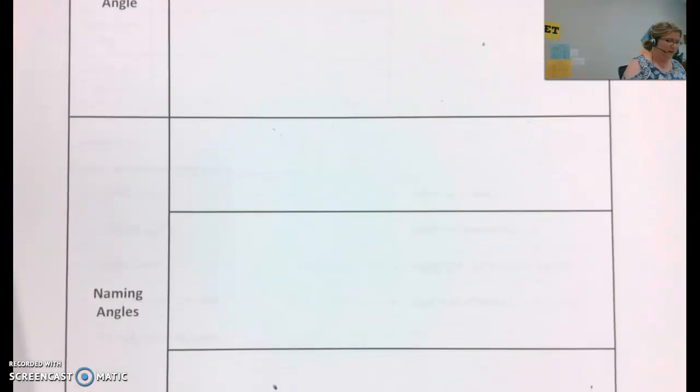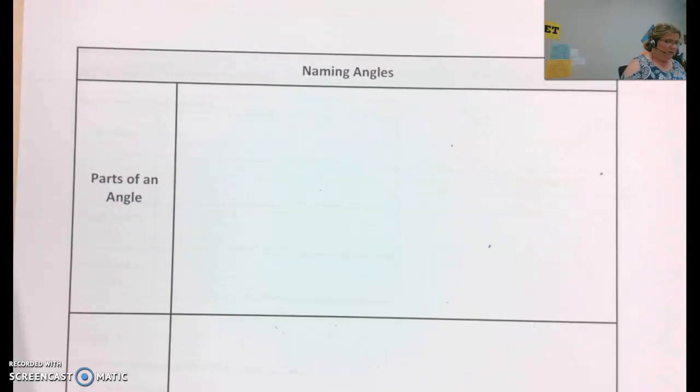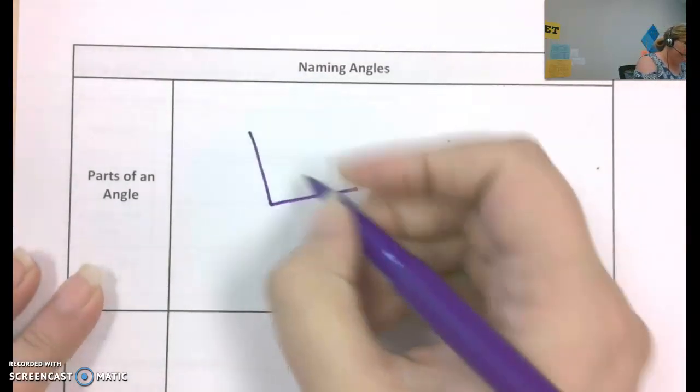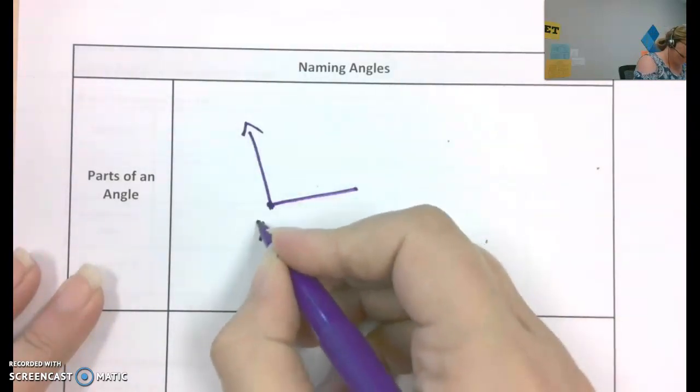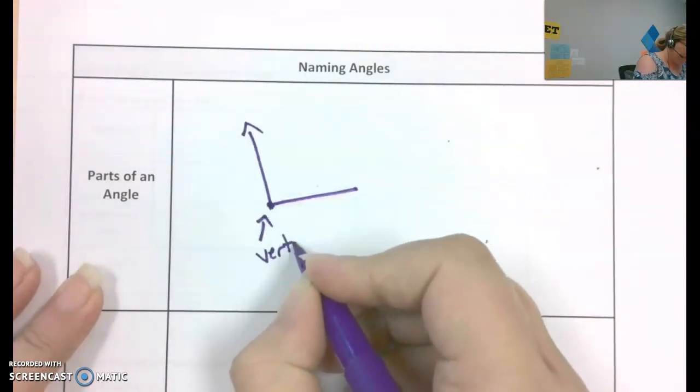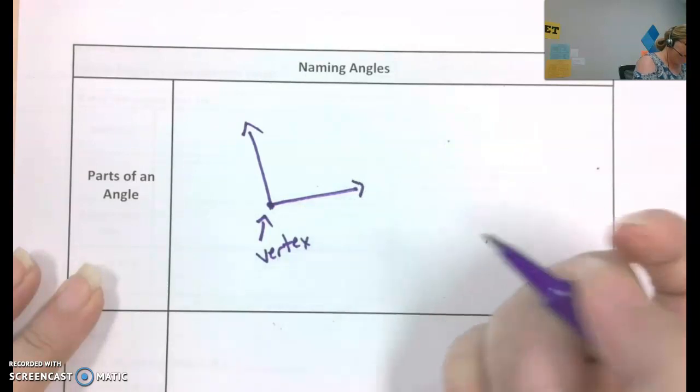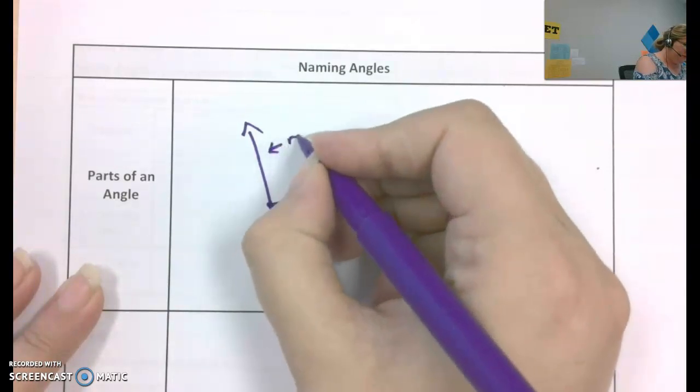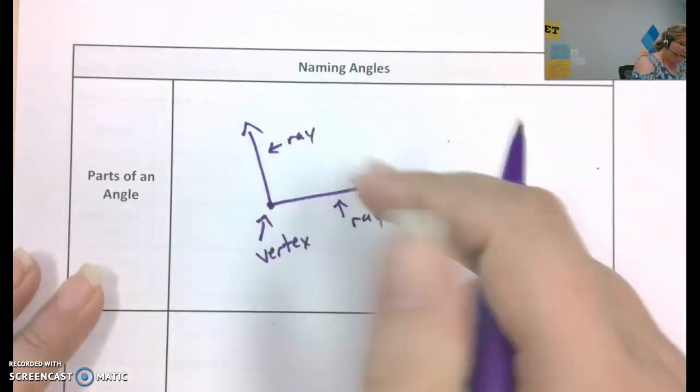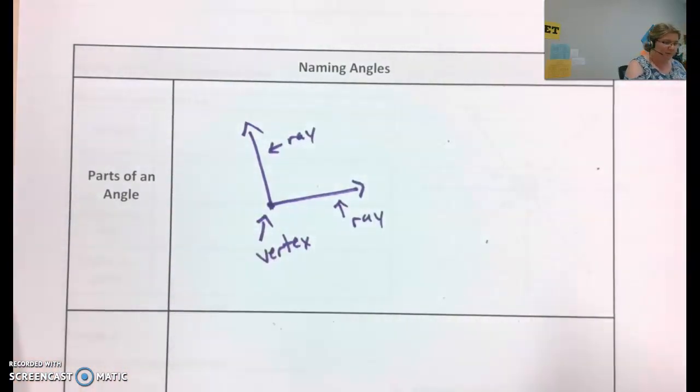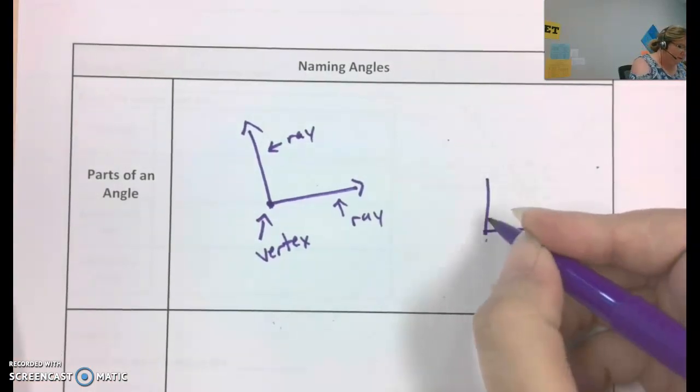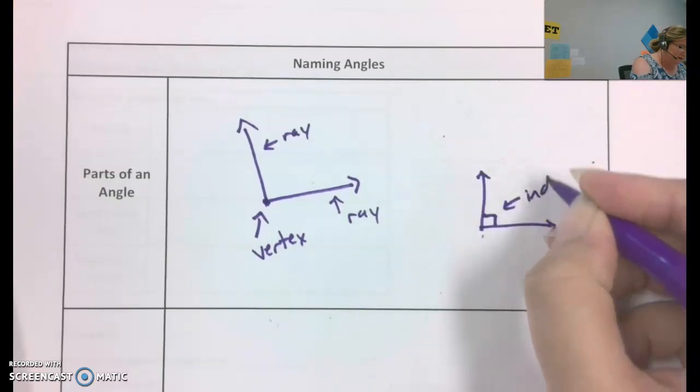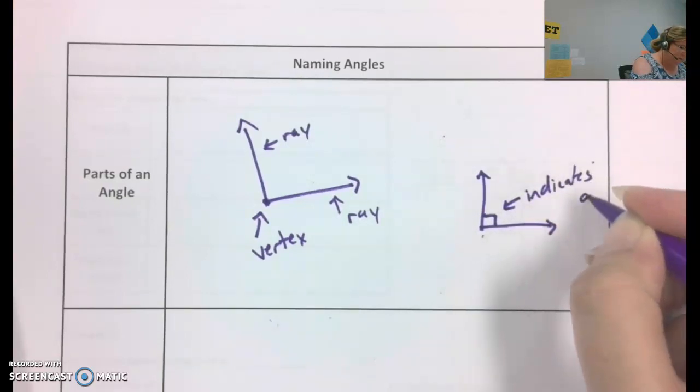Parts of an angle and naming angles. So, parts of an angle. This is the vertex. That is a ray. This is a ray. Two rays meet at a vertex to form an angle.